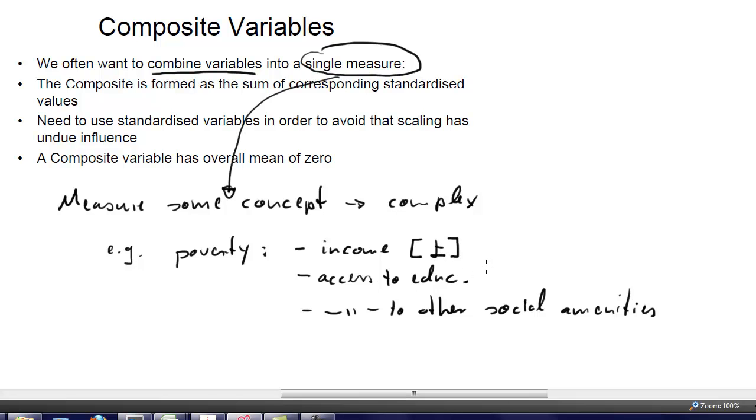This one would certainly be measured in pounds. Access to education, there could be several measures. That may be quantity, how many schools. It may also be what is the quality of schools in your area. So we could have quite a lot of different units of measurements. And access to other social amenities may be measured in different ways.